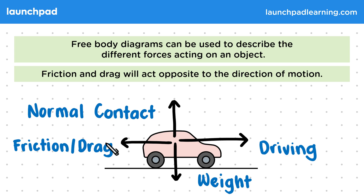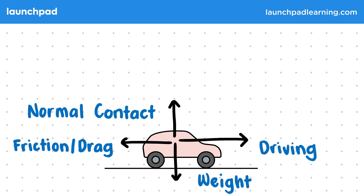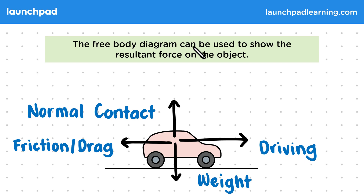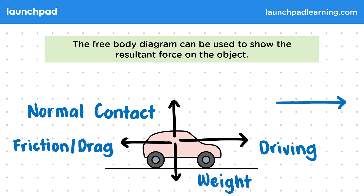So how can we describe the overall effect of these forces? Well, the free body diagram can be used to show the resultant force on the object. The weight and normal contact forces cancel each other out as they have the same magnitude but in opposite directions, so the forces in this axis are balanced. The resultant force is therefore to the right, as vertically the car is balanced, but the driving force to the right is larger than the friction which opposes it.